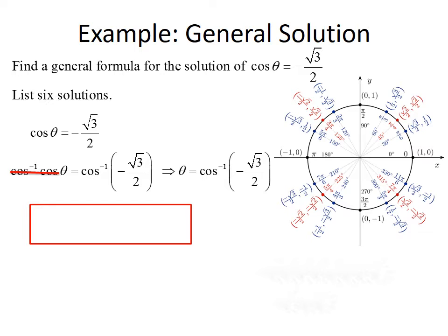Remember, the x-coordinate represents the cosine of an angle. So we want to find the angles that have an x-coordinate of negative root 3 over 2. The first one we see is going to be at 5π/6, and the second one is going to be at 7π/6. So we get theta equals 5π/6 or 7π/6.